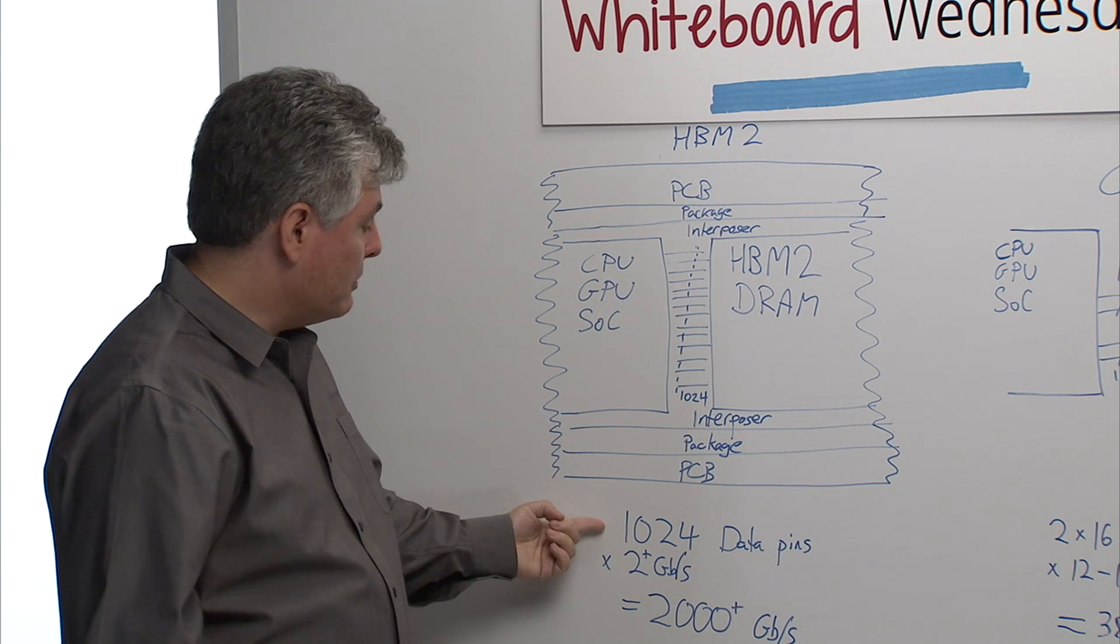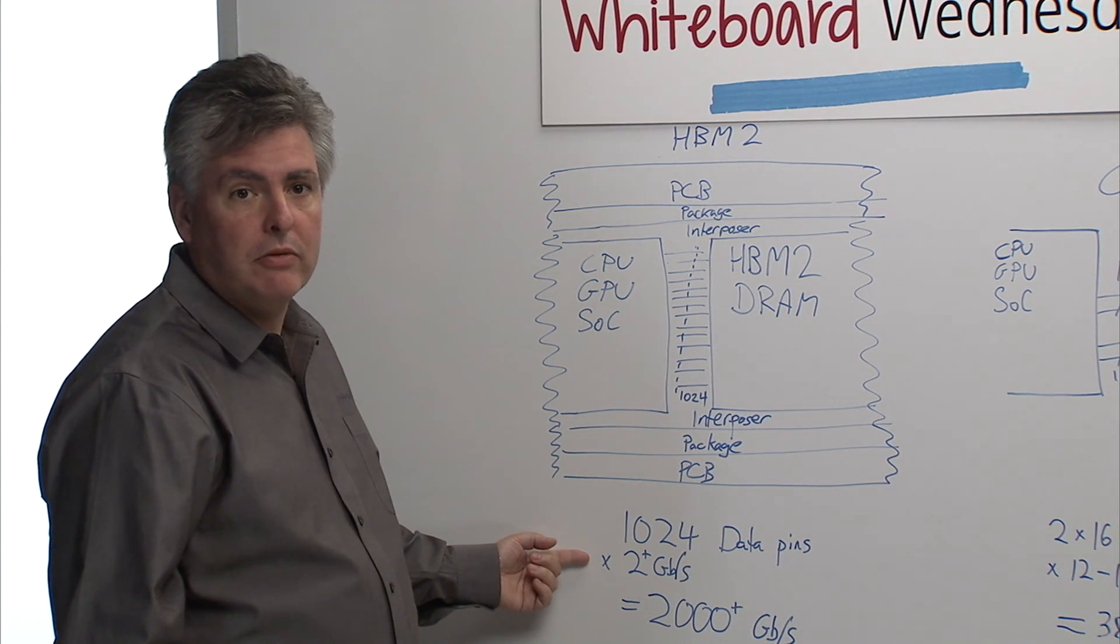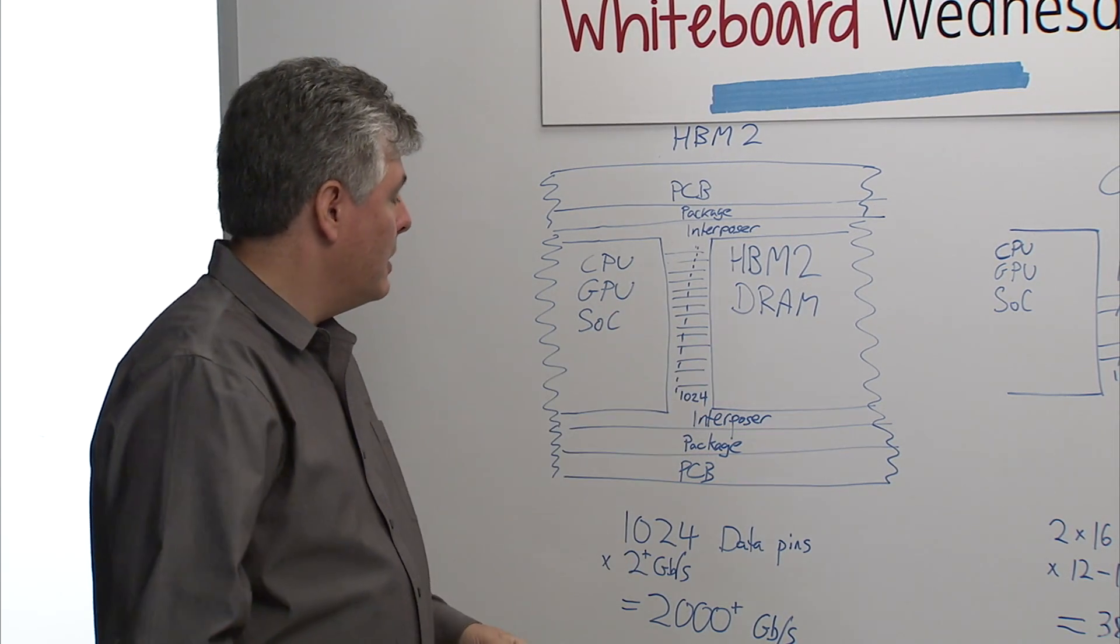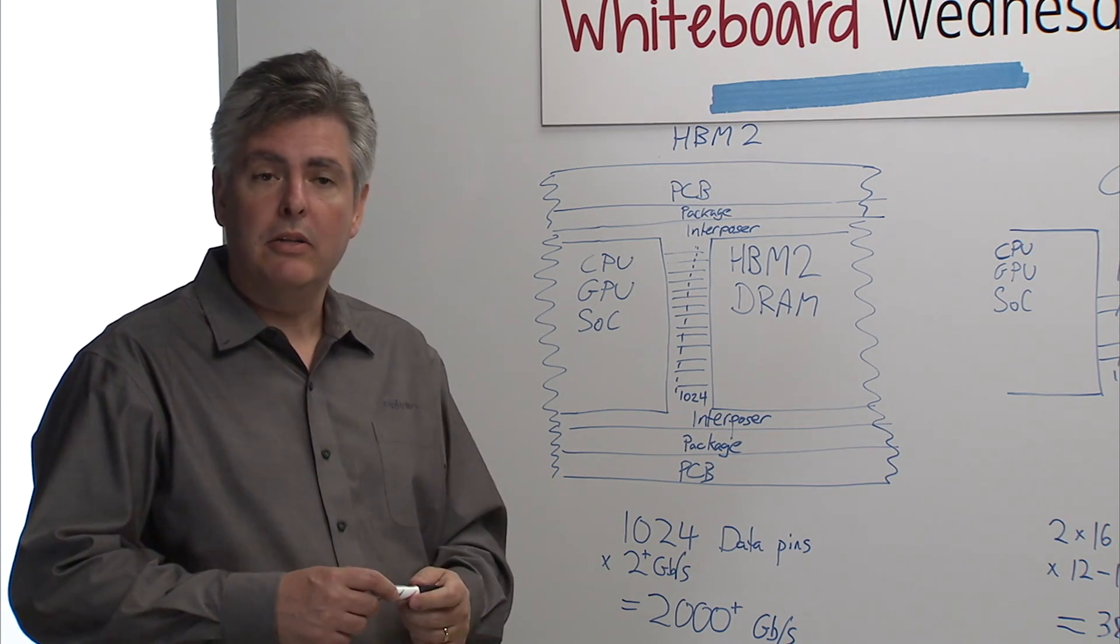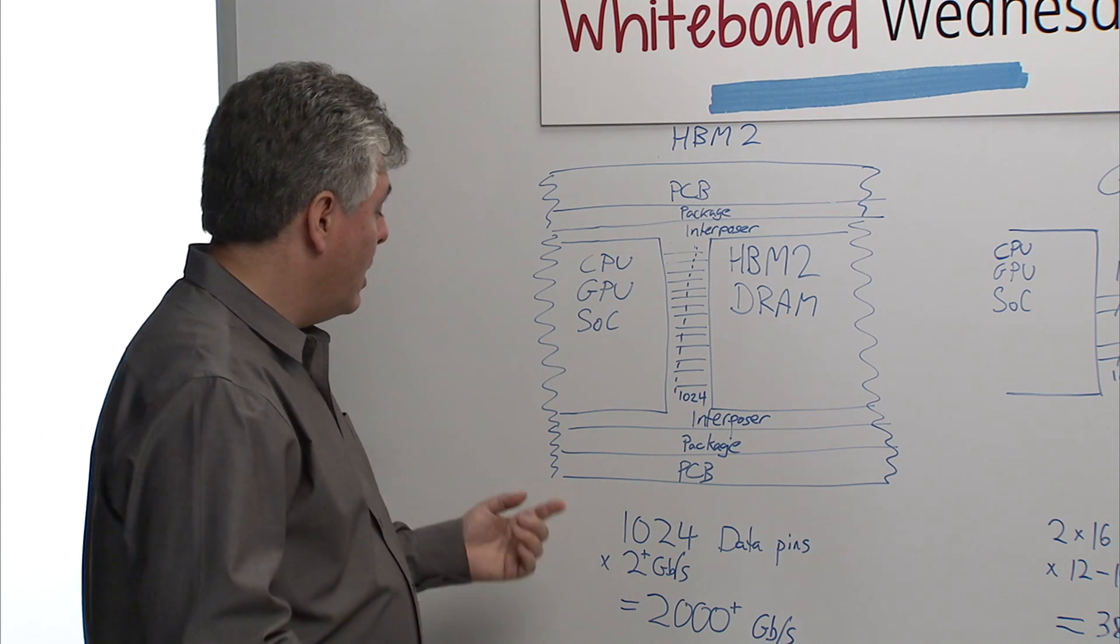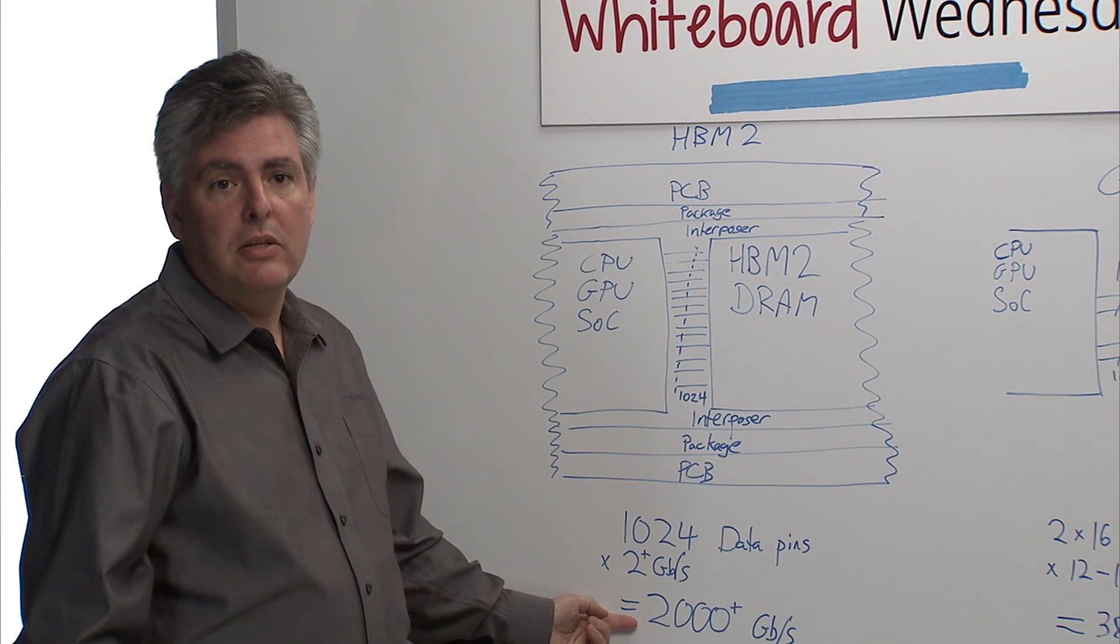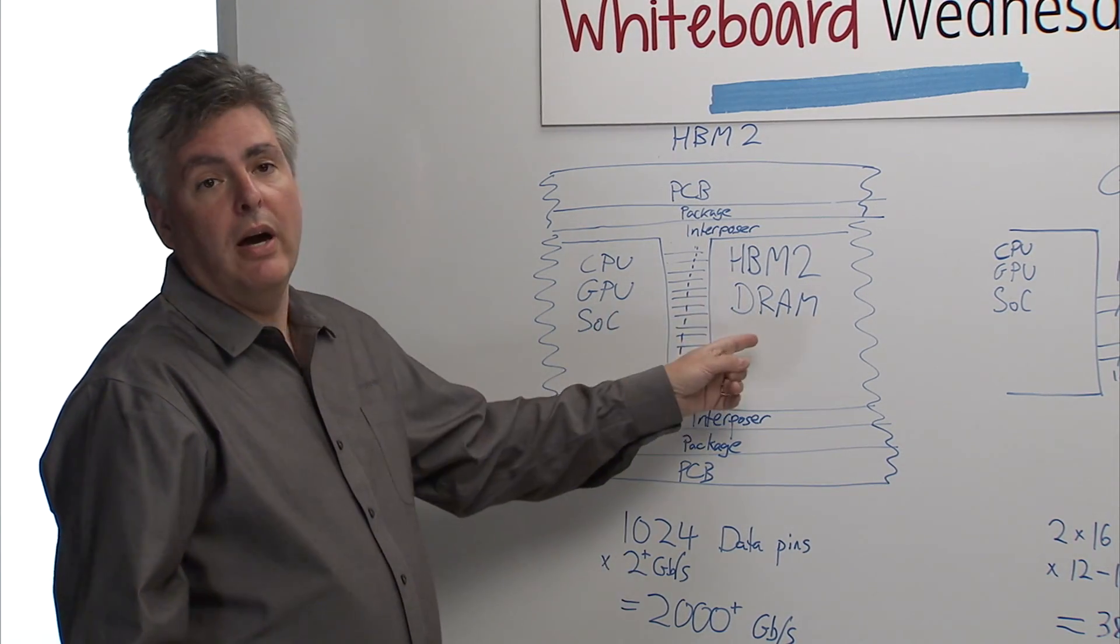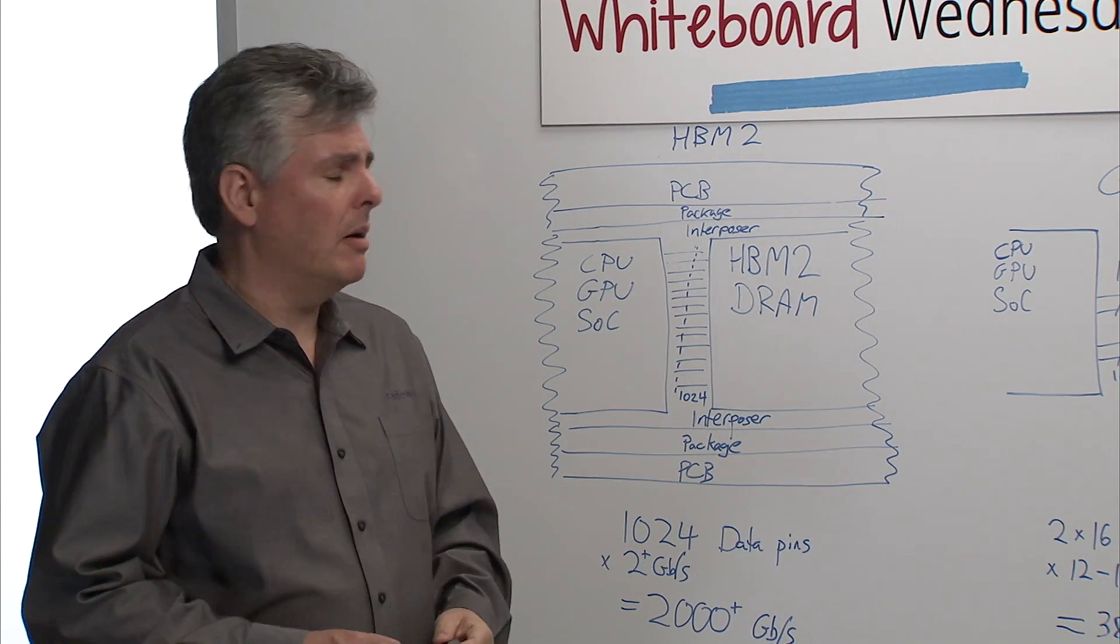How much bandwidth? I've got 1,024 data pins. The current JEDEC standard for HBM2 calls for a 2 gigabit per second data transfer rate between these dies. You'll see memory manufacturer data sheets that may have higher data rates and there's future development happening towards even higher data rates. What this gives us, if we follow the JEDEC standard, is 2,000 gigabits per second of memory bandwidth between these two dies or 2 terabits per second of memory bandwidth. It's a lot of bandwidth. You can really do a lot with it.